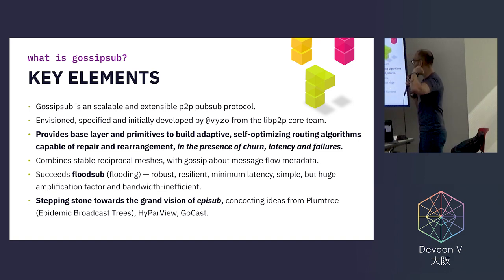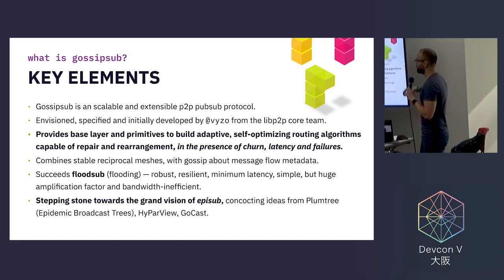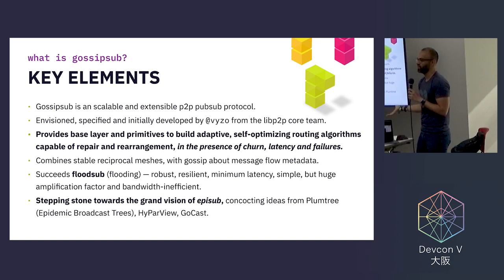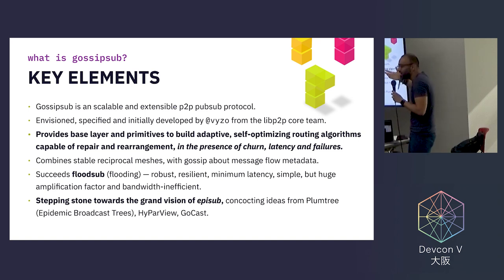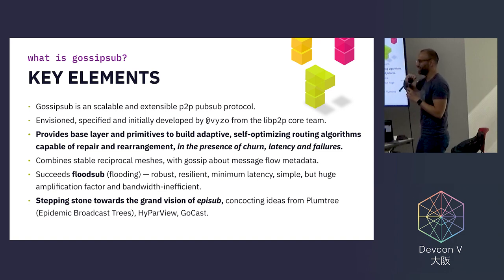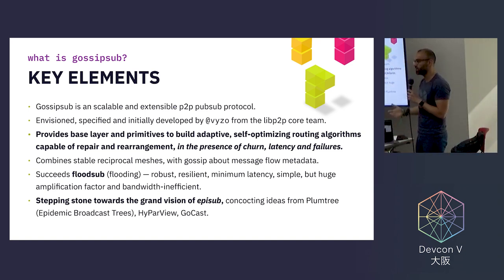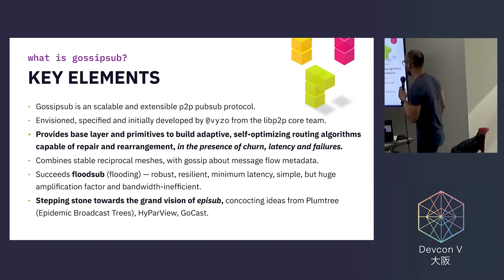The key aspect of GossipSub is that it combines stable reciprocal meshes with gossip about message flow metadata. It succeeds FloodSub, which was in the Lib2B stack — basically the simplest protocol for peer-to-peer PubSub: you disseminate a message to every peer you're connected to that you know is interested in the topic. FloodSub is robust and resilient, but it creates a lot of amplification and clogs bandwidth because of excessive duplication in the network.